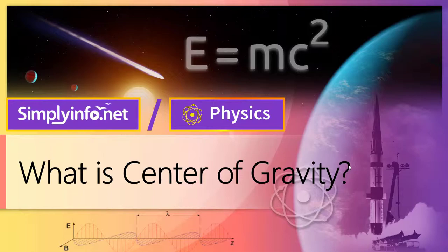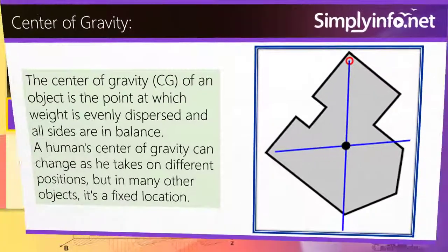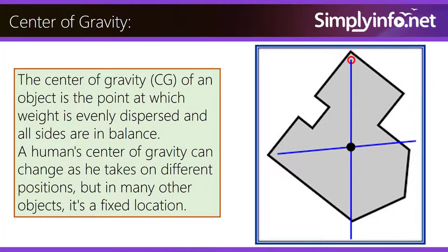What is center of gravity? The center of gravity of an object is a point at which weight is evenly dispersed and all sides are in balance.